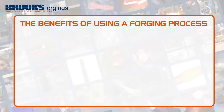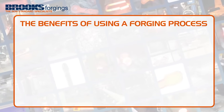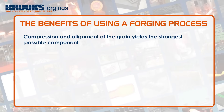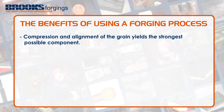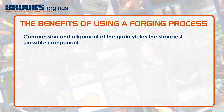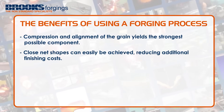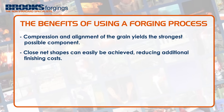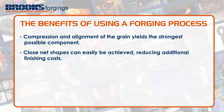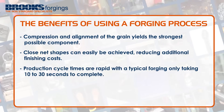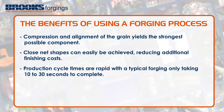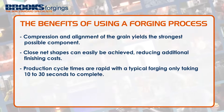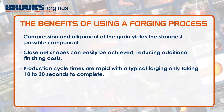To summarize, the benefits of forging are as follows: compression and alignment of the grain yields the strongest possible component; close net shapes can easily be achieved, reducing additional finishing costs; and production cycle times are rapid, with a typical forging only taking 10 to 30 seconds to complete.